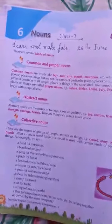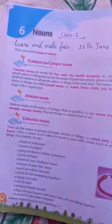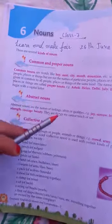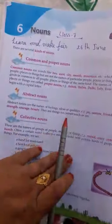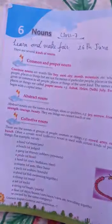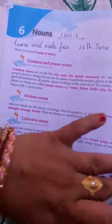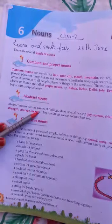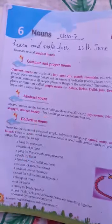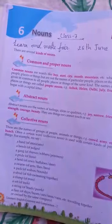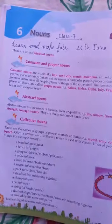Now, abstract nouns. Abstract nouns are the names of feelings, ideas, or qualities. For example: joy, sorrow, friendship, kindness, strength, courage, beauty. They are things we cannot touch or see — these are abstract nouns we cannot touch or see.